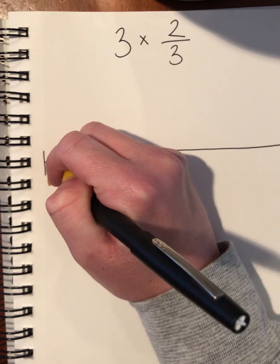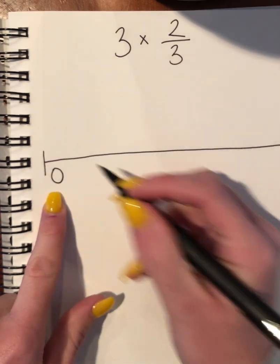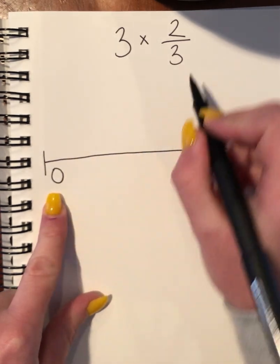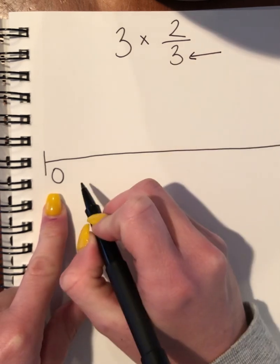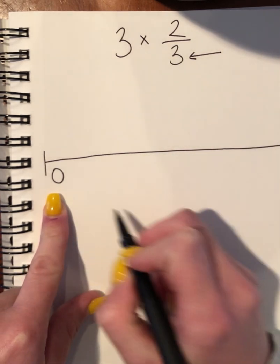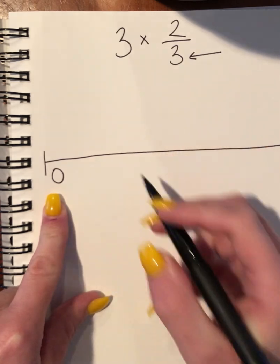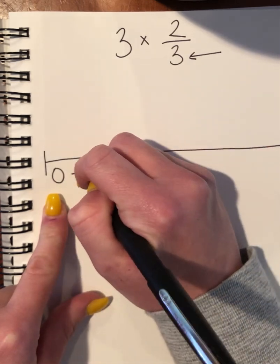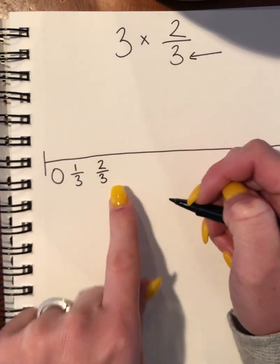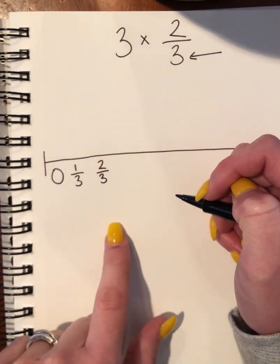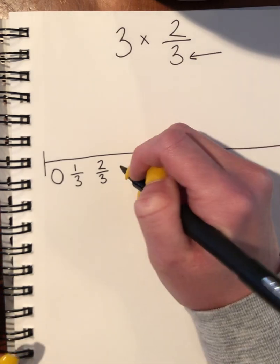I have a zero because that's where you start, and then you break this into thirds because you're looking at your denominator—that lays out what you need to solve this equation. So you put 1/3, 2/3, and then if you have 3/3, that means it's a whole number.